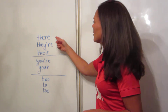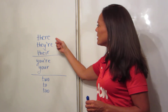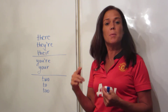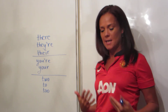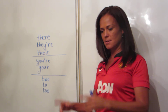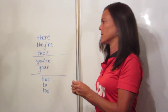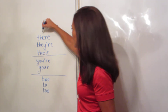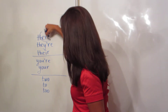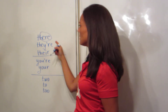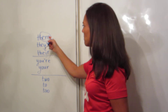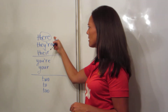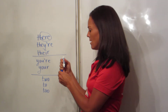Okay, there. T-H-E-R-E is a place. It's over there. Here is a place, and there is a place. And the word 'here' is in 'there,' so that's how you're going to remember there — it's a place over there, like here.